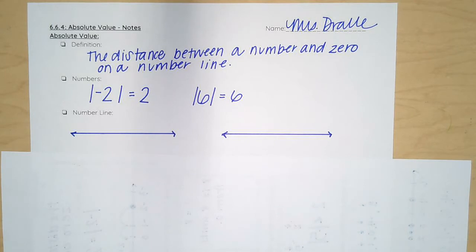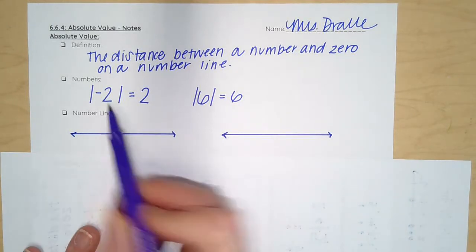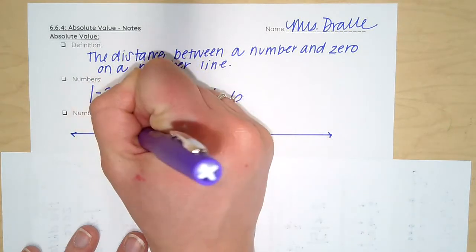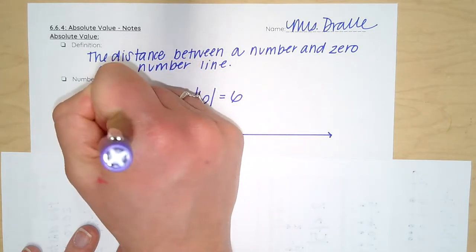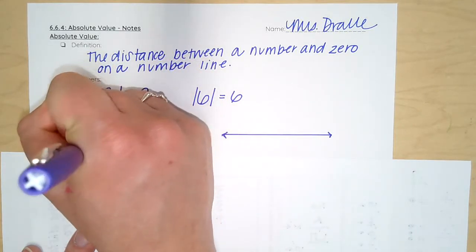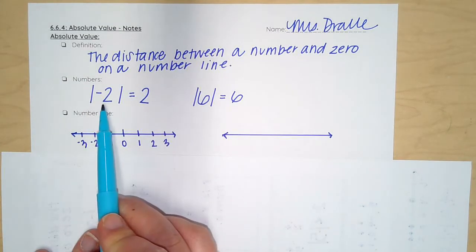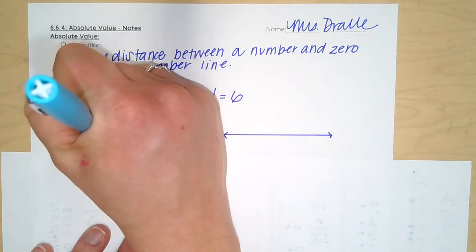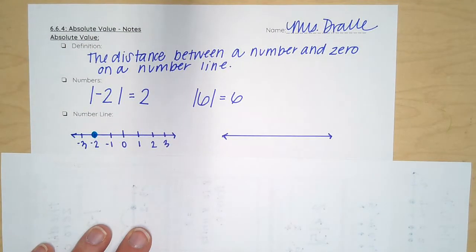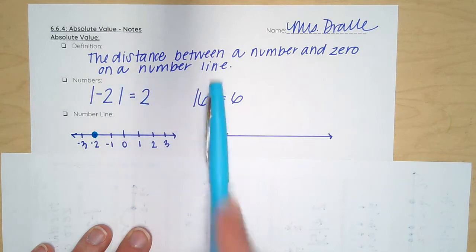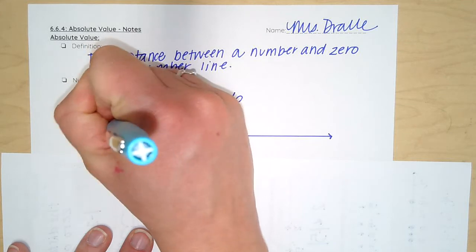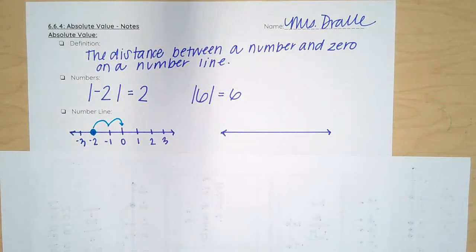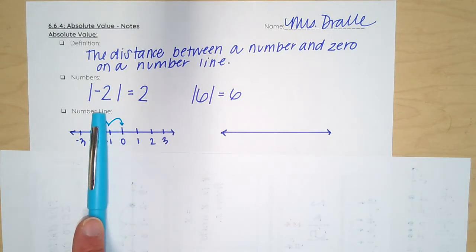So how do we find the absolute value on a number line? Let's go ahead and try. Let's look at negative two first. We have one, two, three, negative one, negative two, negative three. So we are looking at the absolute value of negative two, which is right here. The absolute value is the distance between a number and zero on the number line. How far is that from zero? Two units away. So the absolute value of negative two is two.